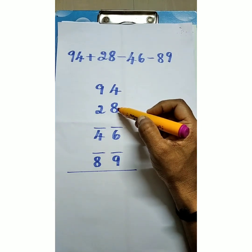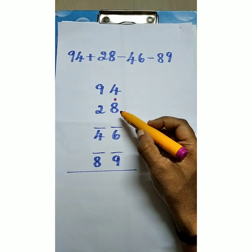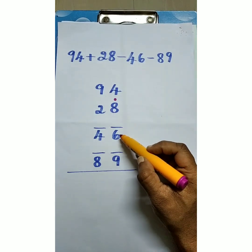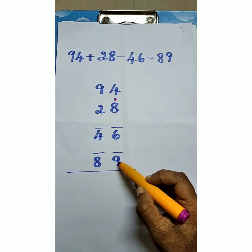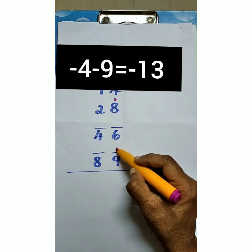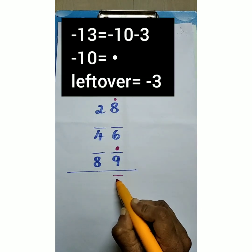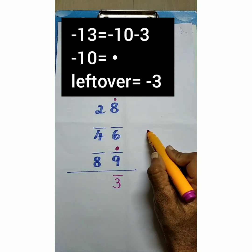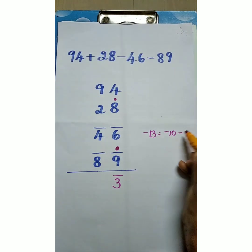4 plus 8 is 12. 12 is 10 plus 2. 1 shoot and 2 leftover. 2 minus 6 is minus 4. Minus 4 minus 9, that is minus 13. So 10 plus 3. 1 shoot and here minus 3 leftover. Minus 13 is minus 10 minus 3.